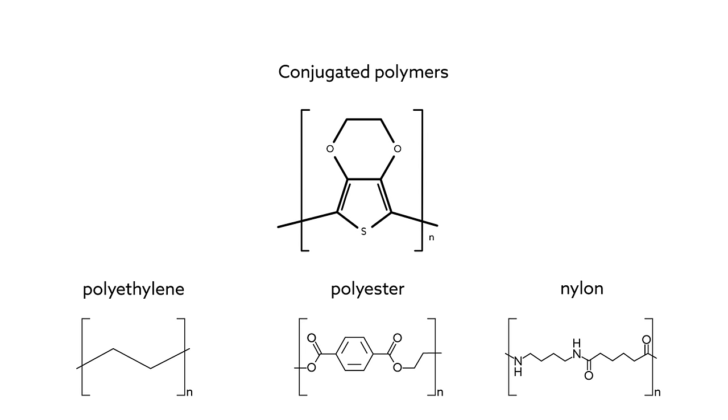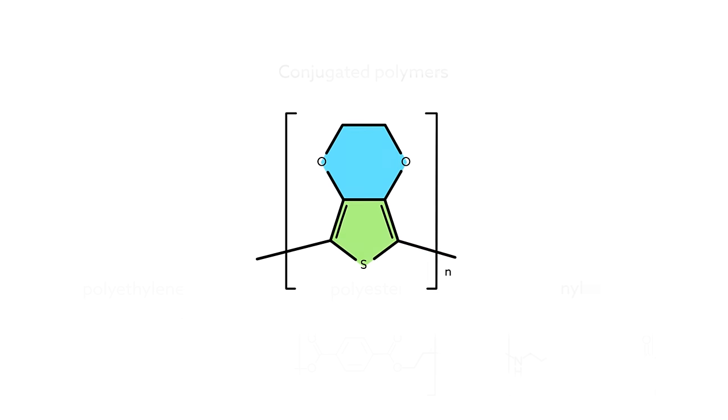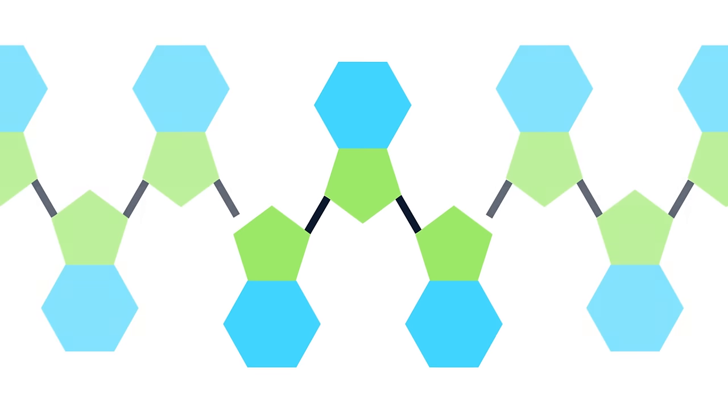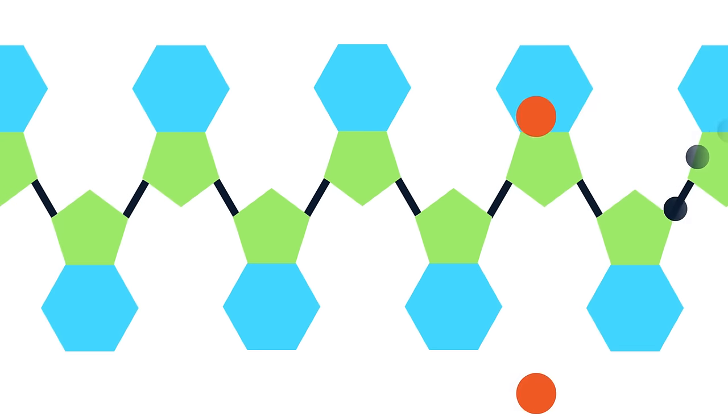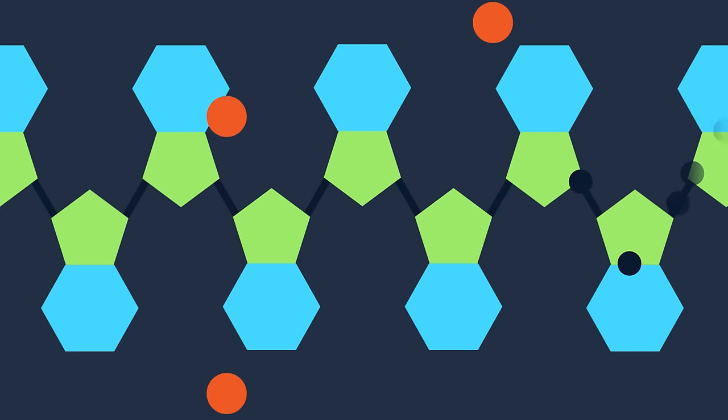...conjugated polymers have alternating single and double bonds along their molecular backbone. This structure allows electrons to move freely across the links in the polymer chain. And when immersed in an aqueous environment, this electron flow is compensated by the flow of ions.